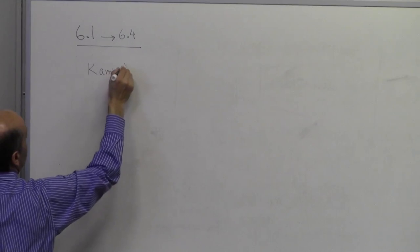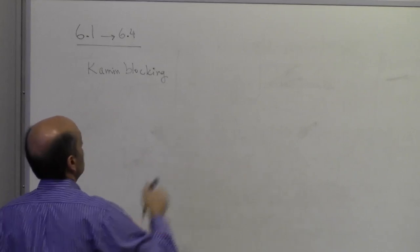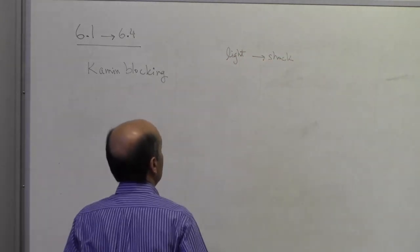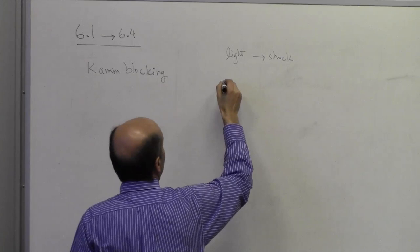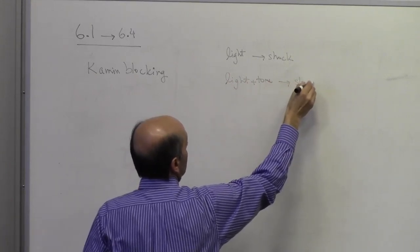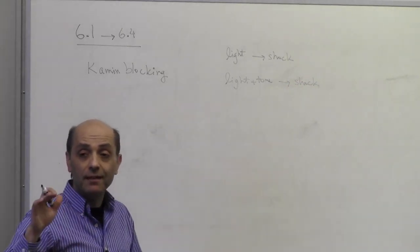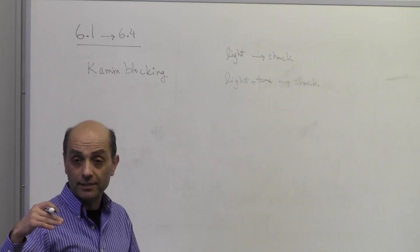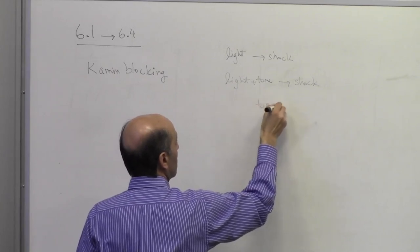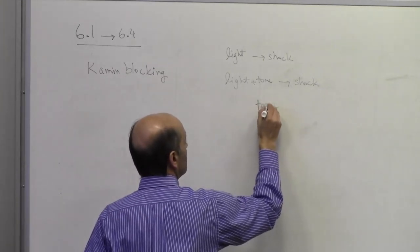The first experiment is Cayman blocking. The animal sees a light and then gets shocked, so it learns to associate these — light isn't good. Then what happens is the animal sees the light and hears a tone, and is still going to get shocked. The interesting observation is that after the animal is trained with these two sets of training blocks, if you just give the animal tone alone — what happens?